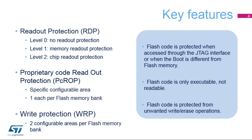RDP prevents flash memory access through the JTAG for all flash memory. PCROP prevents read access of configurable flash memory or SRAM areas performed by the CPU executing malicious third-party code, known as a Trojan Horse. WRP prevents accidental or malicious write-erase operations.